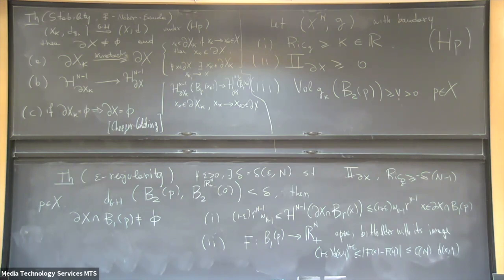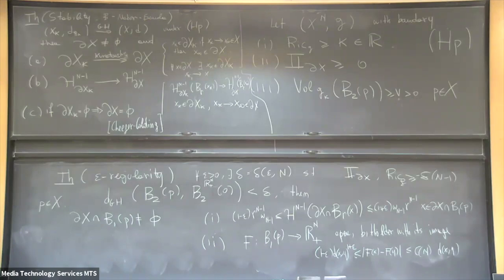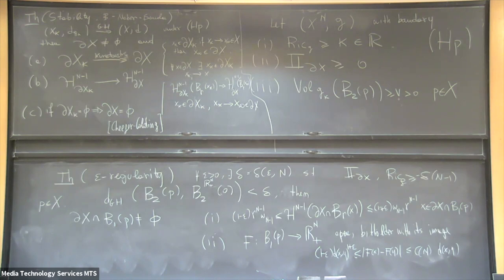What you explained was extending the Gromov-Hausdorff notion to ensure the boundary goes to the boundary. Also, why HP? Just for hypothesis. I was disturbed by the P playing a role — I thought it might be an L^p space — but it is just the point, not the L^p space.